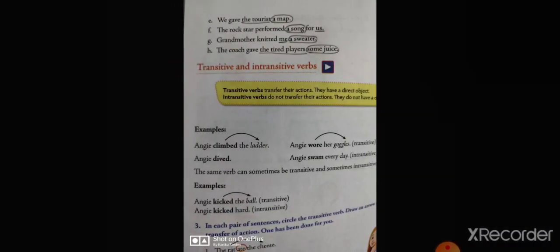Continuing with direct and indirect objects. 'We gave the tourist a map' — direct object is 'a map,' indirect object is 'the tourist.' 'The rock star performed a song for us' — direct object is 'a song,' indirect object is 'us.' 'Grandmother knitted me a sweater' — direct object is 'a sweater,' indirect object is 'me.' 'The coach gave the tired player some juice' — direct object is 'some juice,' indirect object is 'the tired player.'